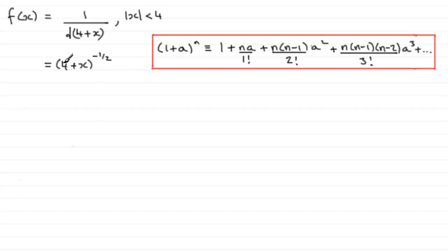This has a 1 at the start here and we've got a 4, so we need to get rid of that 4. We can think of this as all being to the power minus a half, but if we pull out the 4, we get 4 times (1 + x/4) to the power minus a half.